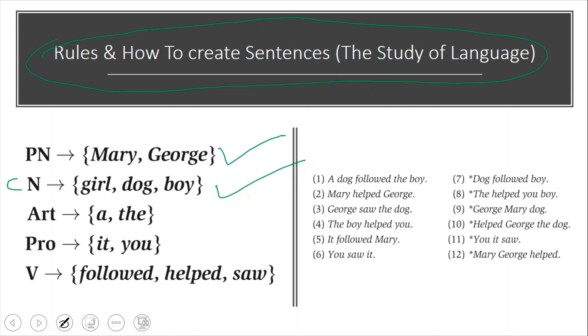For articles, we have 'a' and 'the,' and 'an' can also be used. For pronouns, we have it, you, and similarly he, she, etc. And for verbs, we use verbs that are appropriate.